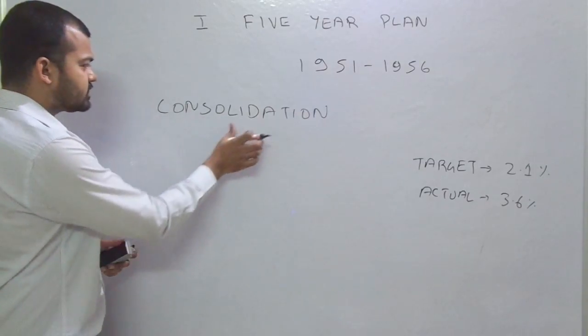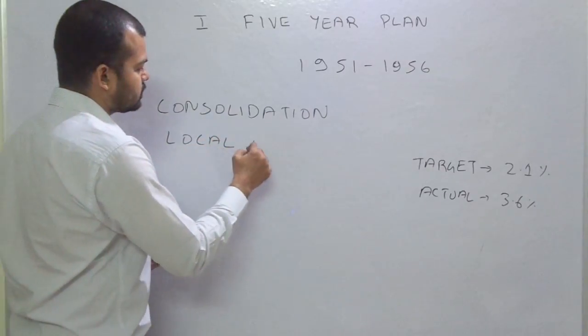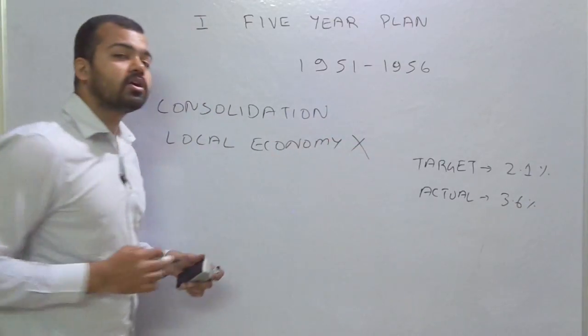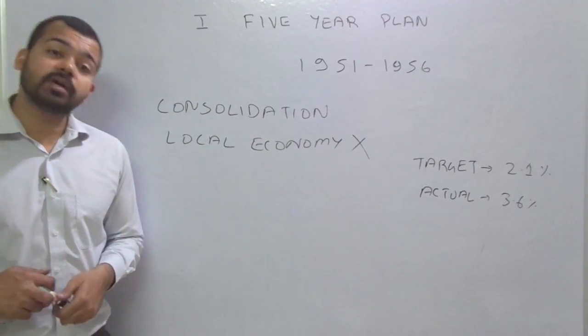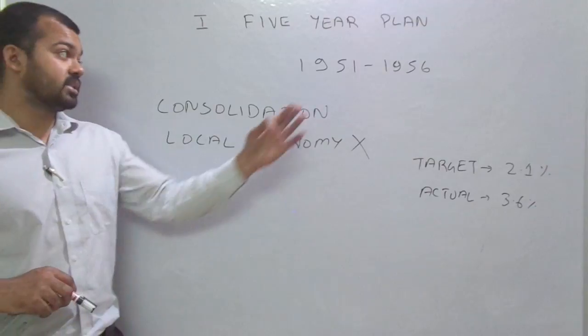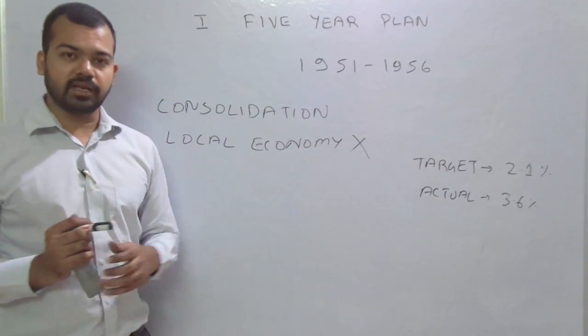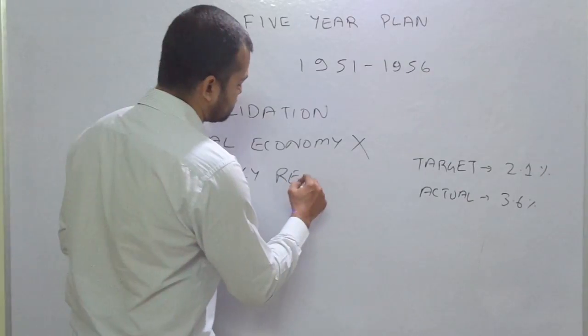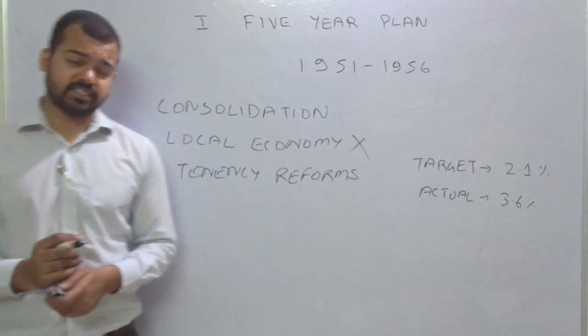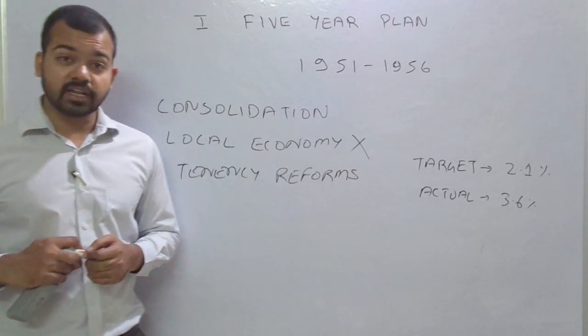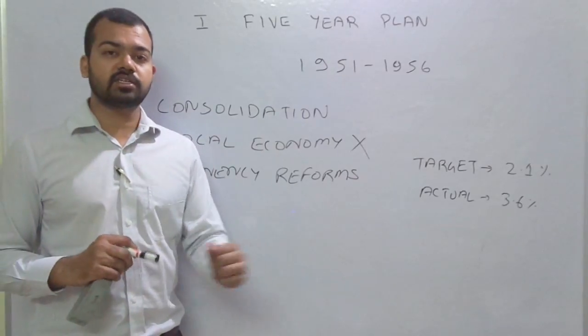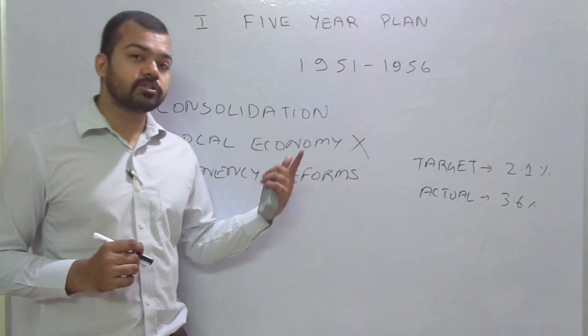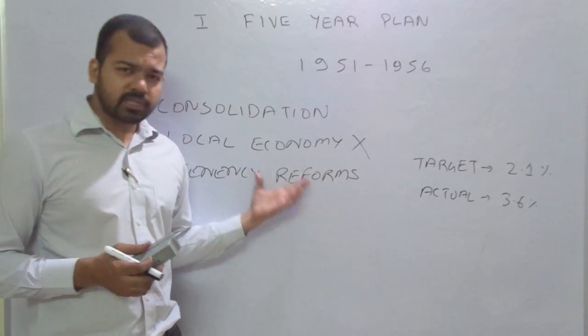We also needed to remove the local economy. Government set the target to remove this local economy. Here local economy means zamindars, intermediaries, that informal economy that was prevalent at the time of independence. From 1951-1956, we needed to remove zamindari. For that government introduced tenancy reforms. Tenancy reform meant land belongs to tenants, leading to land reforms later on. Land reforms is one of the biggest reforms in agriculture and is still pending till date in 2017.